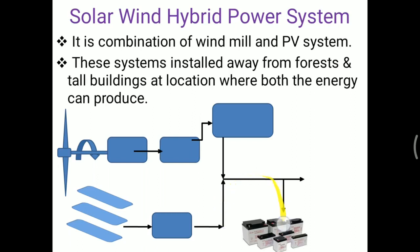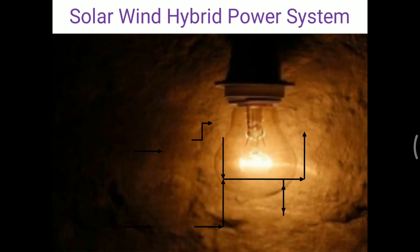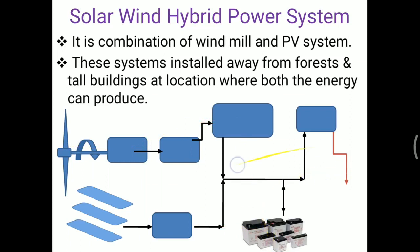Energy is stored in the battery in terms of DC. The next component is solar PV cells — when solar radiation strikes the PV cells, DC supply is generated. Through a charge controller, the supply goes to the battery for storage. The battery acts as a DC source. For consumer load supply, the DC is converted to AC through an inverter. Here, when wind energy supply is low during the day, solar energy compensates, and at night when solar supply is zero, wind energy provides maximum supply, ensuring continuous supply to the consumer.